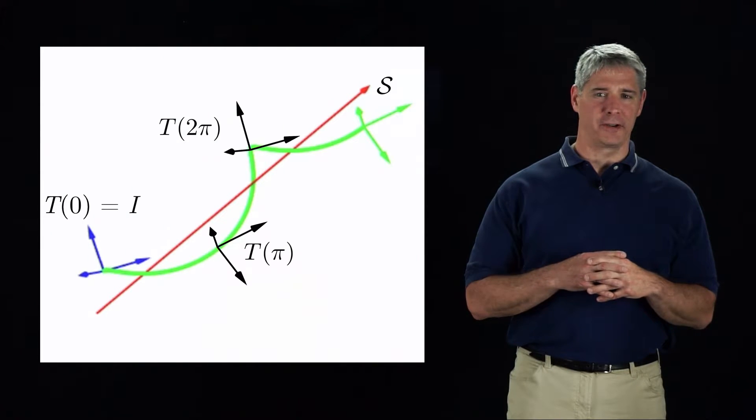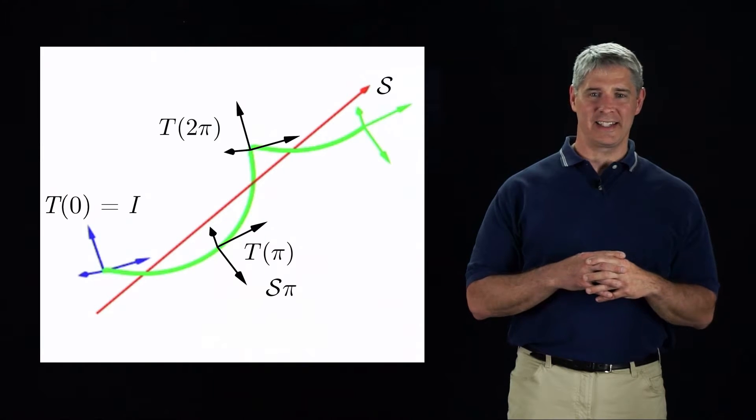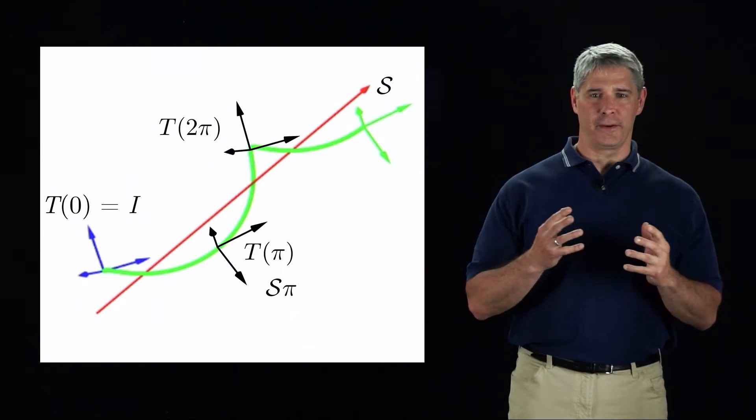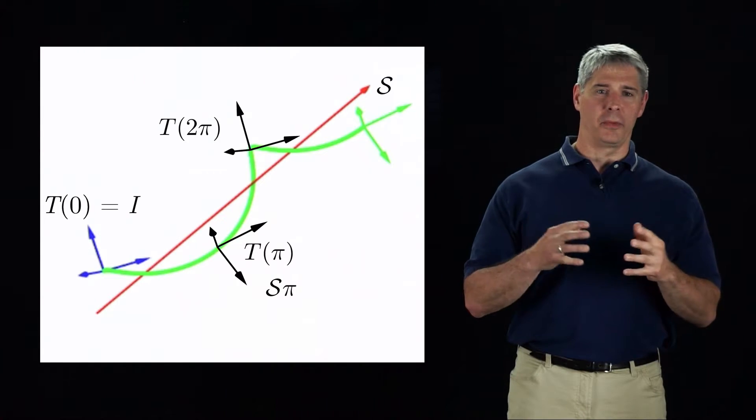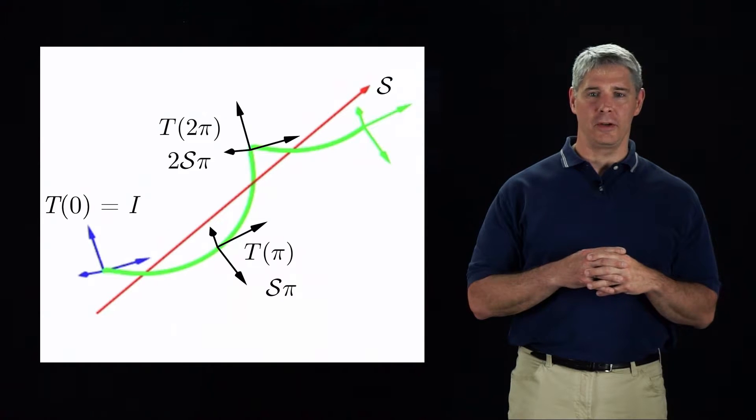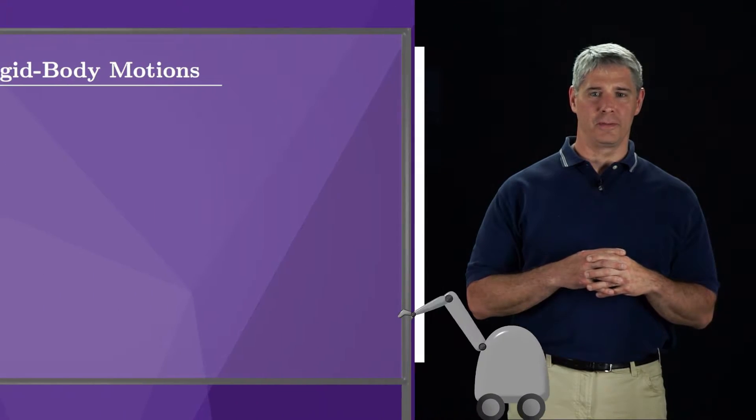In this case, we could represent the configuration at time pi as s times pi, meaning the configuration achieved after the frame has followed the screw axis s for time pi. Similarly, we could represent the configuration at time two pi as s times two pi.